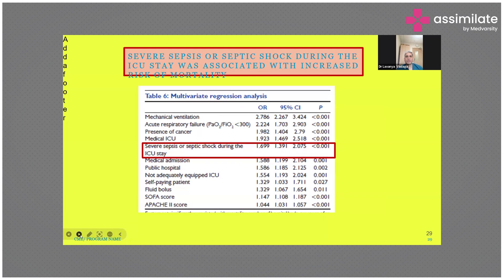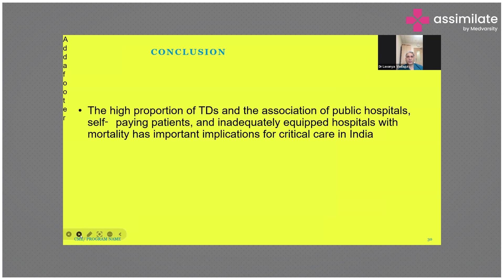Looking at these patients with severe sepsis and septic shock — their duration of mechanical ventilation, co-morbidities, reasons for medical admission, SOFA score, and APACHE score — everything placed them at highest risk, and the risk of mortality increased indirectly. The conclusion is that the high proportion of sepsis, particularly the association of septic shock at inadequately equipped public hospitals, has important implications for critical care in India.